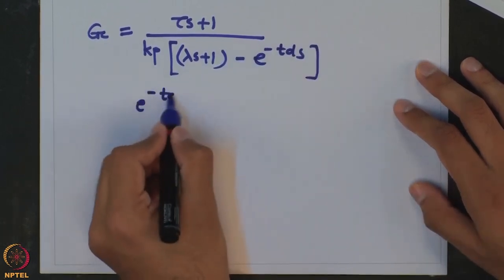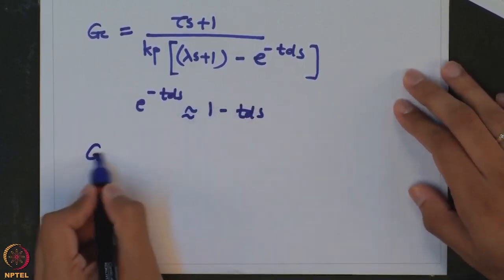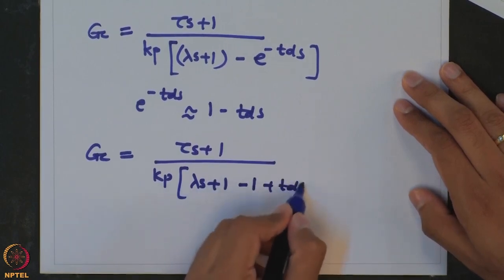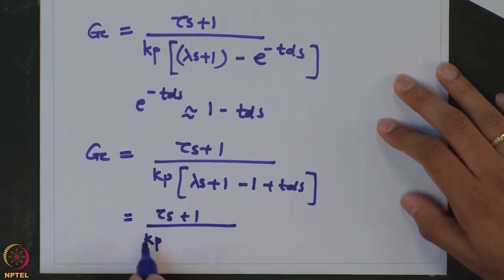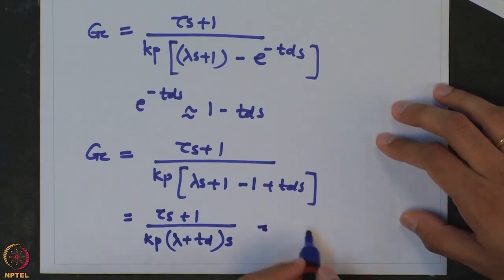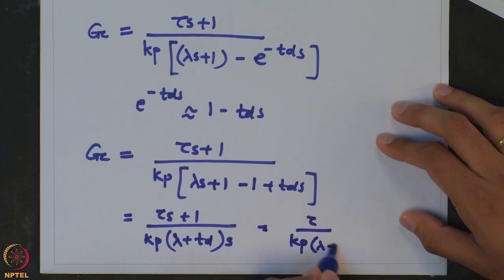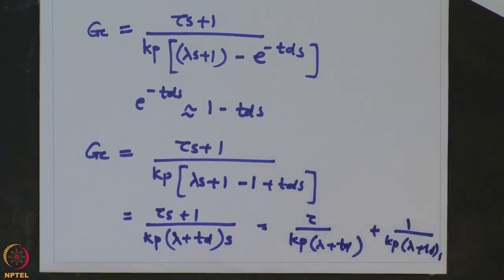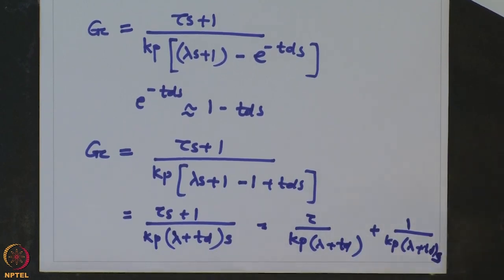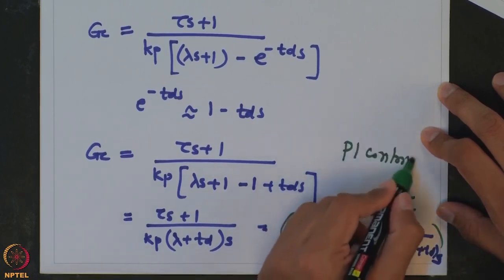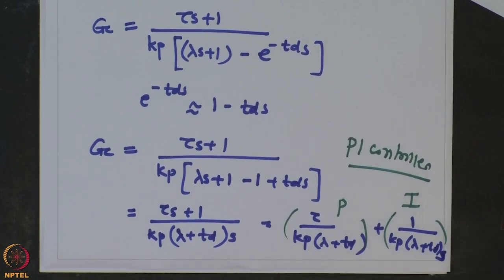We approximate e^(−Td·s) as (1 − Td·s). We get Gc as (τs + 1) over (Kp · λs · (1 − (1 − Td·s))), which simplifies to (τs + 1) over (Kp · (λ + Td) · s), equal to τ over (Kp·(λ + Td)) · (1 + 1/(τs)). Again, you can see this is a PI controller — the first term is the P action and the second is the I action. So for a first order plus dead time system, if we properly select the desired response, we again end up with a PI controller.